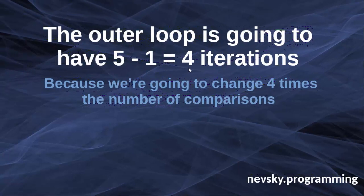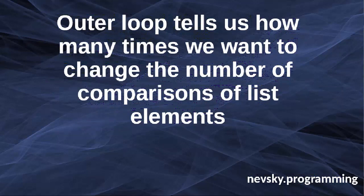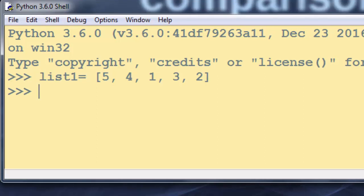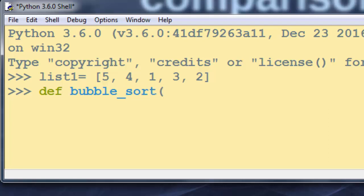When implementing the bubble sort algorithm we need two loops: an inner loop and an outer loop. The outer loop is going to have four iterations because we're going to change the number of comparisons four times. As you remember, at first we had four comparisons, then three, two, and finally one. The outer loop tells us how many times we want to change the number of comparisons of list elements. I'm going to write a function — let's call it bubble_sort — which is going to take a list as an argument.